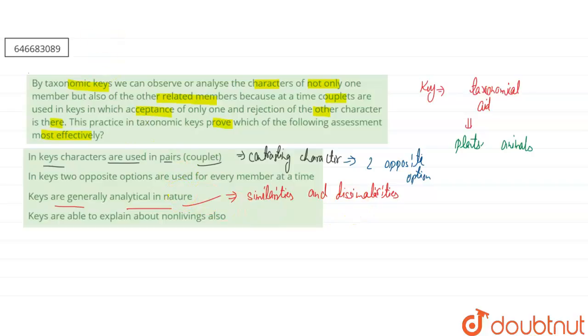If you are talking about our fourth one, that is: keys are able to explain about non-living also. It is incorrect, as it is generally used for plants and animals.